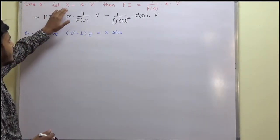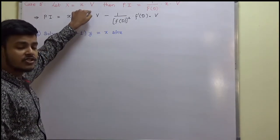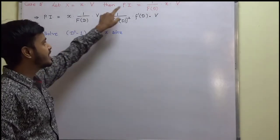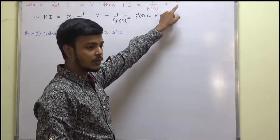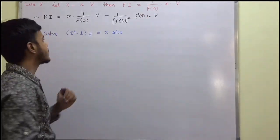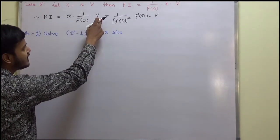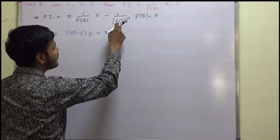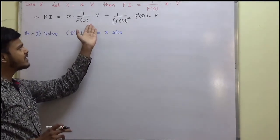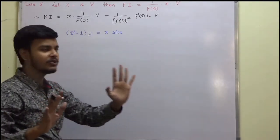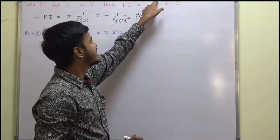This rule says: when the right-hand side has x multiplied by some function v, then PI can be written as 1 upon f(D) into x into v. This rule allows us to write PI as x into 1 upon f(D) into v, minus 1 upon f(D) squared into f'(D) into v. You just need to keep v common in both terms and apply the rule.